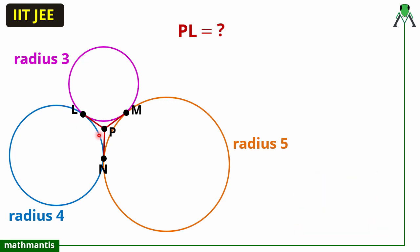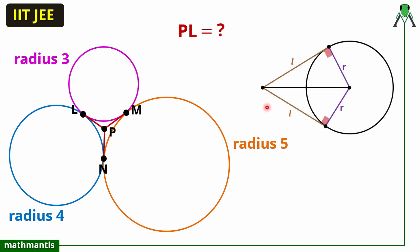Now let's discuss the solution. In this question we have to find the length PL, but what if we had to find PM or PN? We can say that all three lengths are equal, based on the property of a circle: if we draw two tangents from an external point, the lengths of the two tangents are equal. So PL and PM are equal for one circle, PM and PN are equal for another circle, and PL and PN are equal for the third circle. So PL, PM, and PN are all equal.